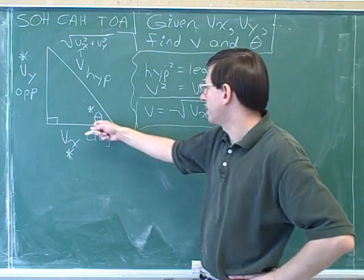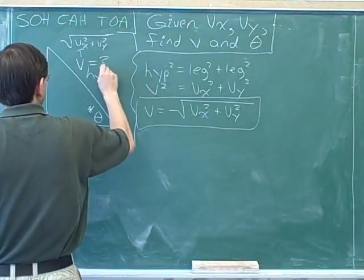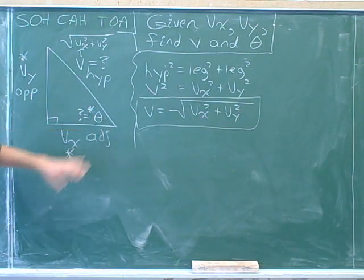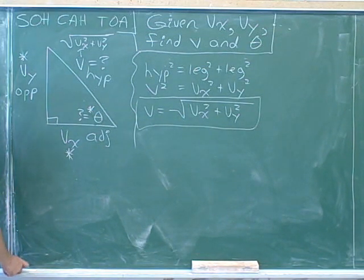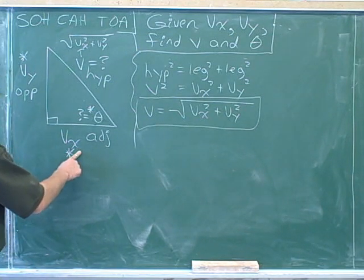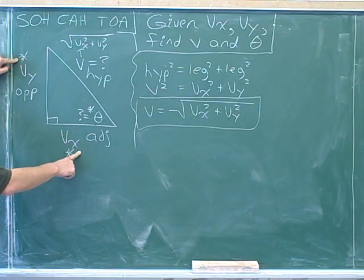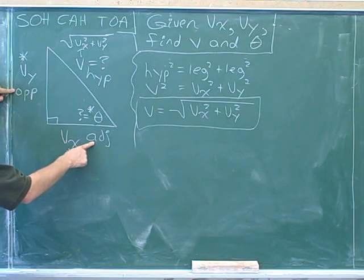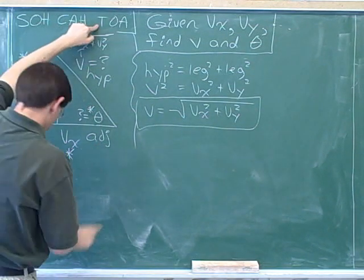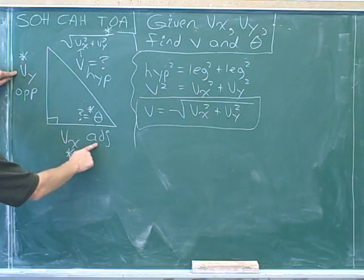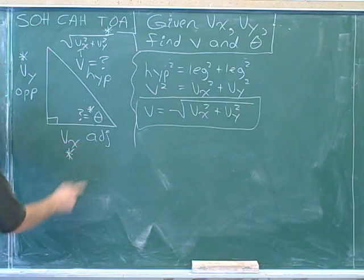We're also trying to figure out what theta is. What information are we going to use to find theta? The asterisks remind us which sides we were given: the adjacent and opposite sides, v sub x and v sub y. Which trig function would we use if given the adjacent and opposite sides? The tangent — TOA. The tangent involves the opposite and adjacent sides, which are exactly the sides we've been given. So let's use tangent.